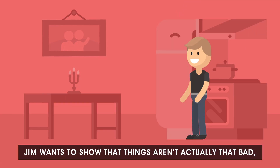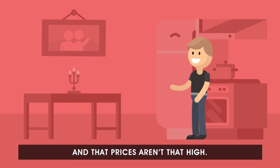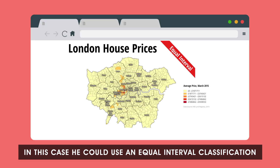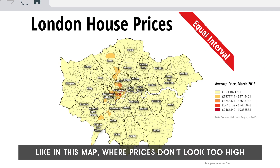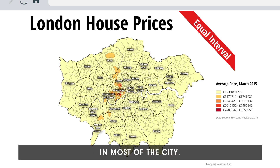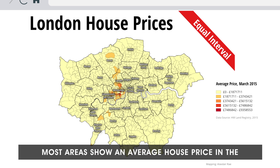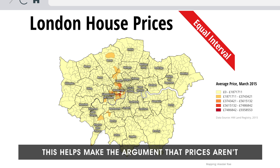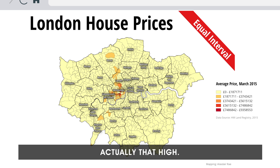Jim wants to show that things aren't actually that bad and that prices aren't that high. In this case he could use an equal interval classification, like in this map, where prices don't look too high in most of the city. Most areas show an average house price in the lowest statistical category. This helps make the argument that prices aren't actually that high.